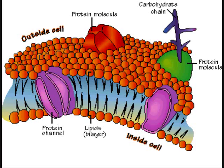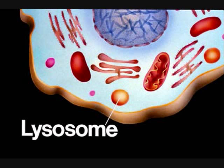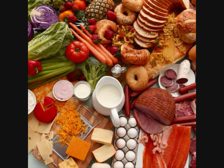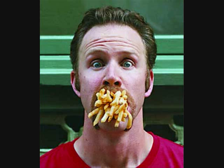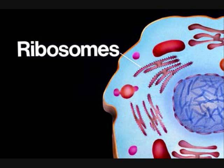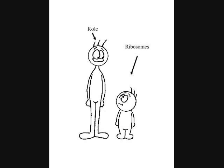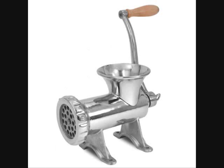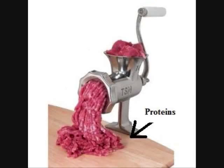Hooke saw the parts of a cell and Eureka he yelled. The cell membrane is very key because it controls what enters and leaves. The lysosomes break down food. Ribosomes are small but the role is tall — they're like machines producing proteins.